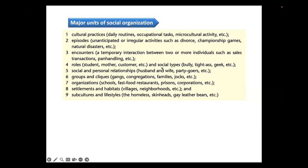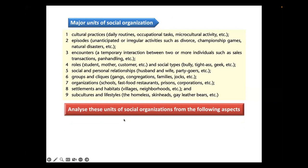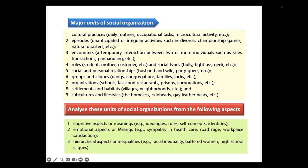What gets coded includes major units of social organization such as cultural practices, daily routines, occupations, episodes, irregular activities like divorce or national disasters, and encounters or interactions. This will vary depending on methodology and research question. We can also code rules, social types, personal relationships, groups, families, organizations, subcultures, and lifestyles. Important aspects to analyze include native meanings, ideologies, rules, self-concept, identities, emotional aspects like sympathy or road rage, and hierarchical aspects or inequalities.